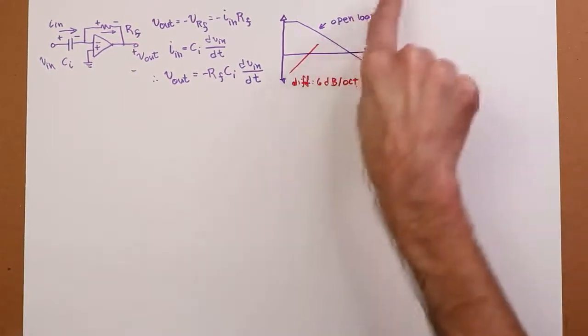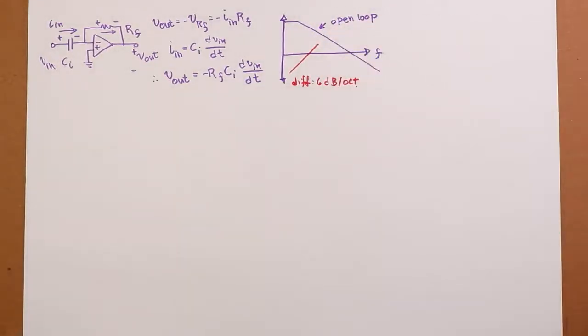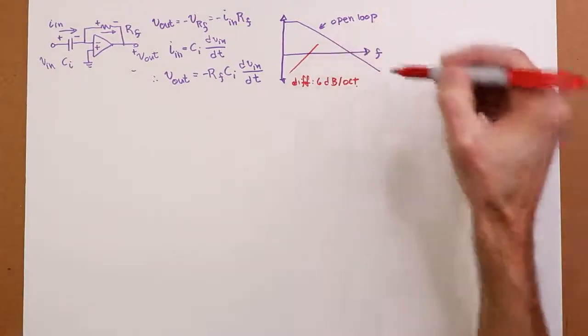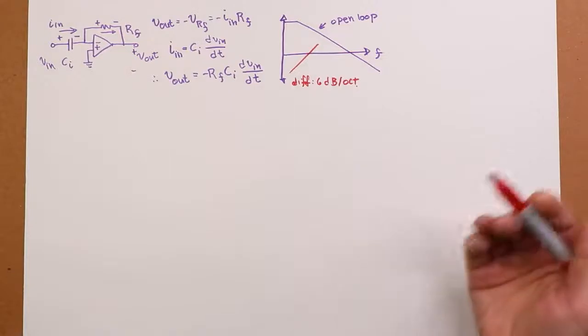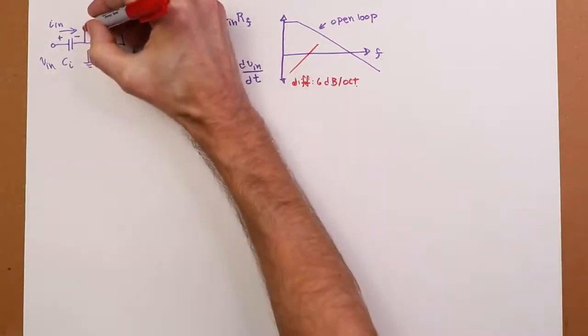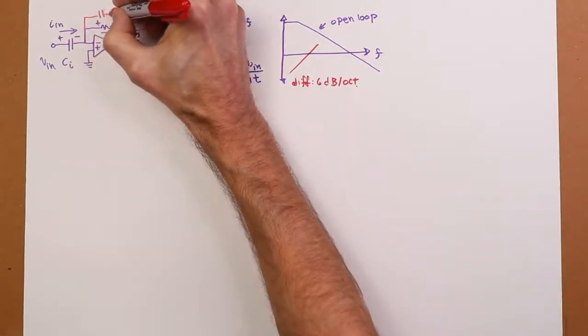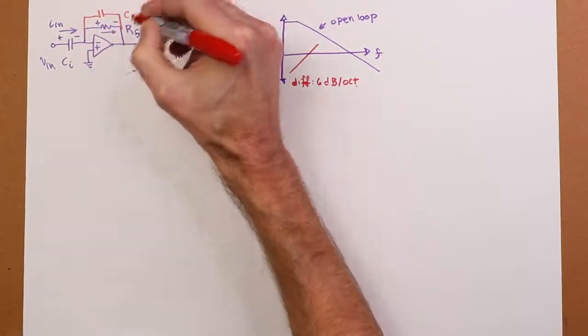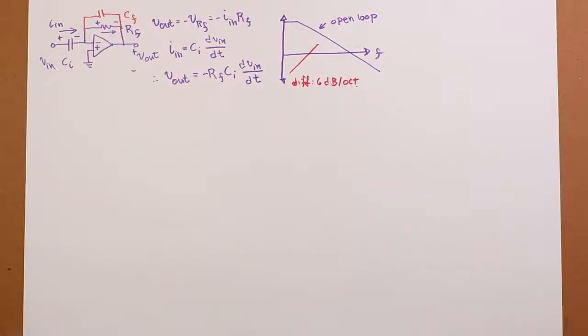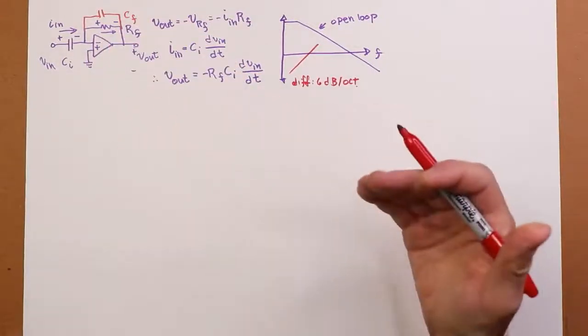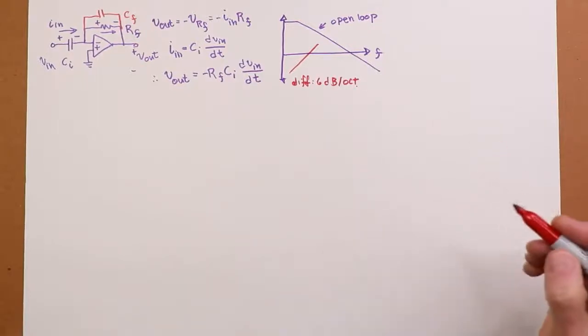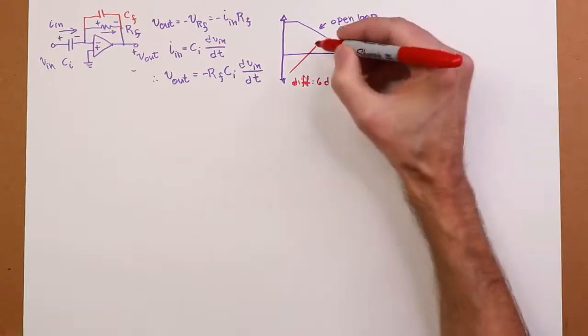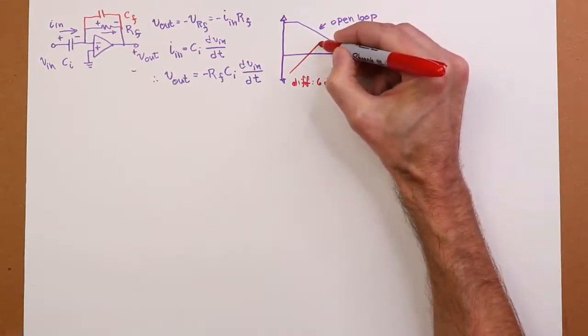Now, this will continue on up until we hit the open loop response, and what ends up happening is we can get some instability and we can get a lot of high frequency noise. So to help compensate for that, we often put in a little capacitor right across the R_F. I'll call it C_F. That is going to shunt R_F at high frequencies and limit the high frequency gain. What will end up happening in that case is, just like with the integrator where we had an F_low, we're going to end up with an F_high.